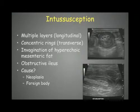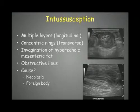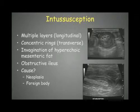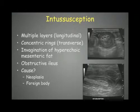Intussusceptions are very common in young dogs. If found in older dogs or cats, we have to consider a primary cause such as neoplasia. In cats, we should look closely for signs of gastrointestinal neoplasia. Foreign bodies should also be considered, as we can have both an intussusception and a foreign body, especially in dogs.